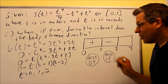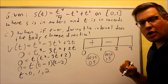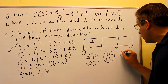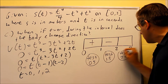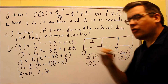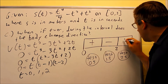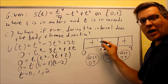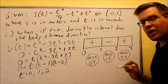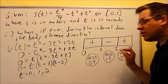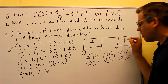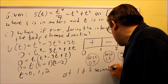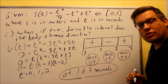As long as you pick the correct number in each interval, you should always get the same result — that's why it doesn't matter which number you pick. For the last interval, testing 2.5 between two and three in the velocity function gives a positive result. Looking at the sign chart: positive → negative means a direction change at t = 1 second, and negative → positive means a direction change at t = 2 seconds. So the body changes direction at one and two seconds.